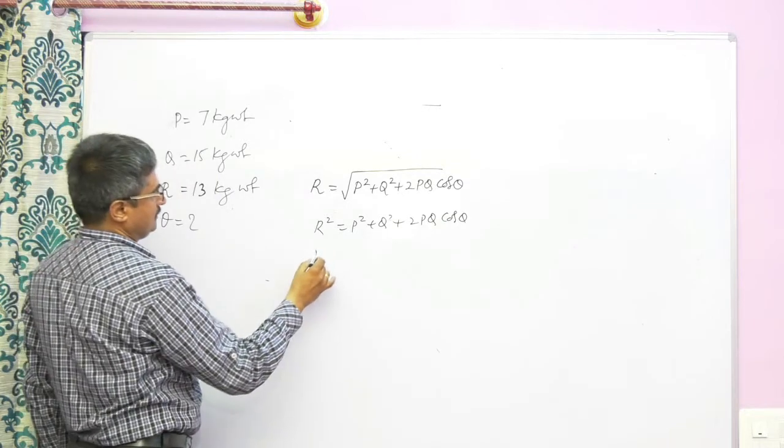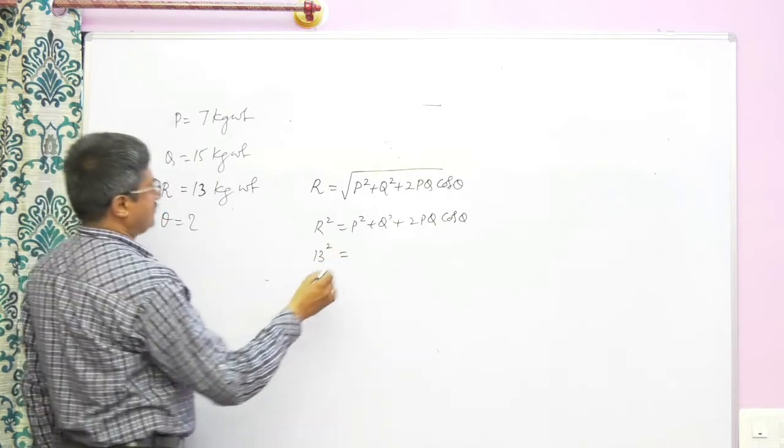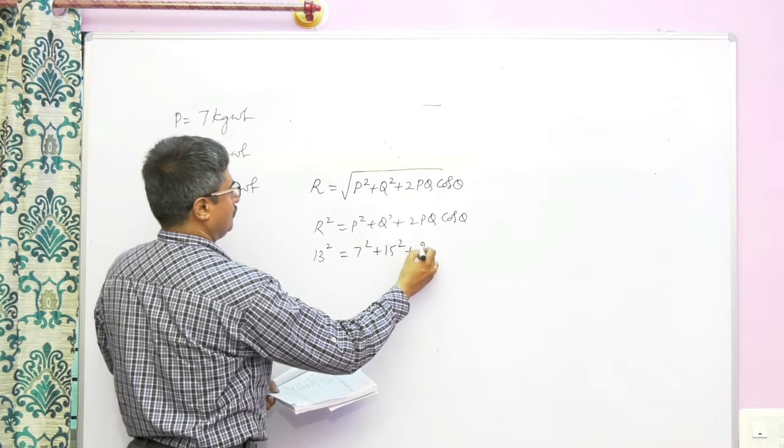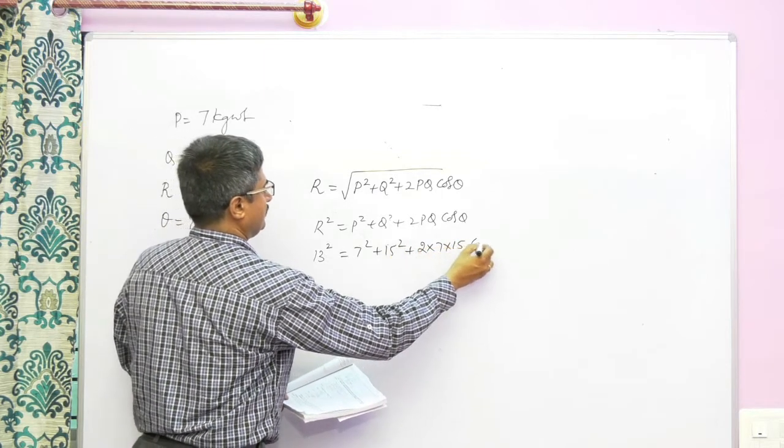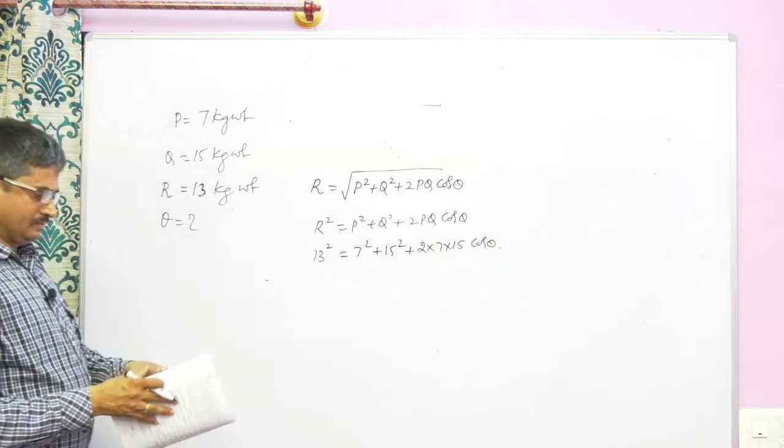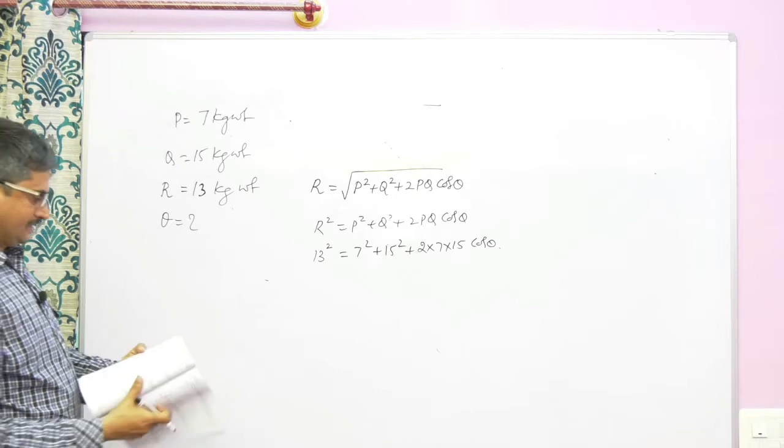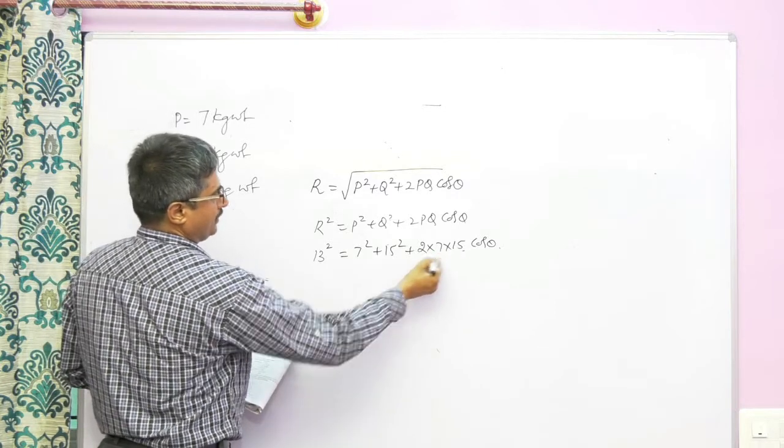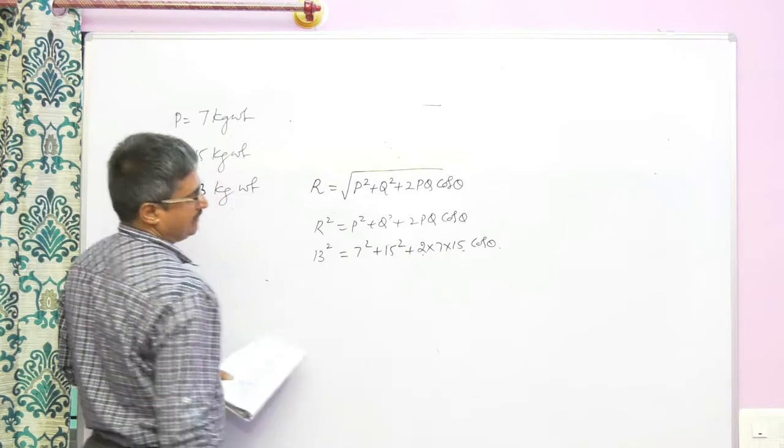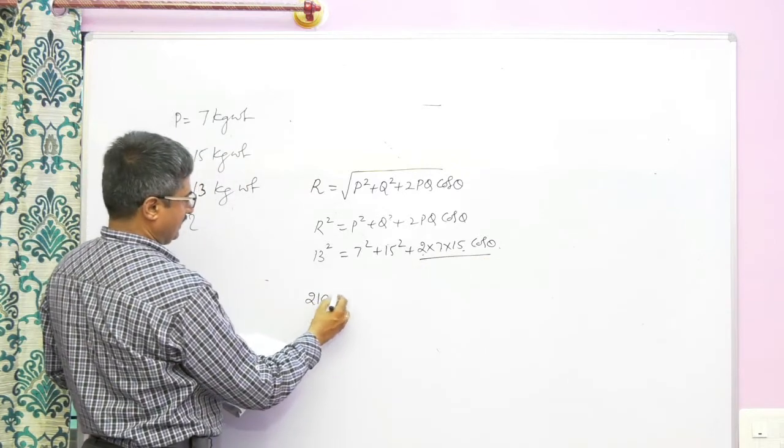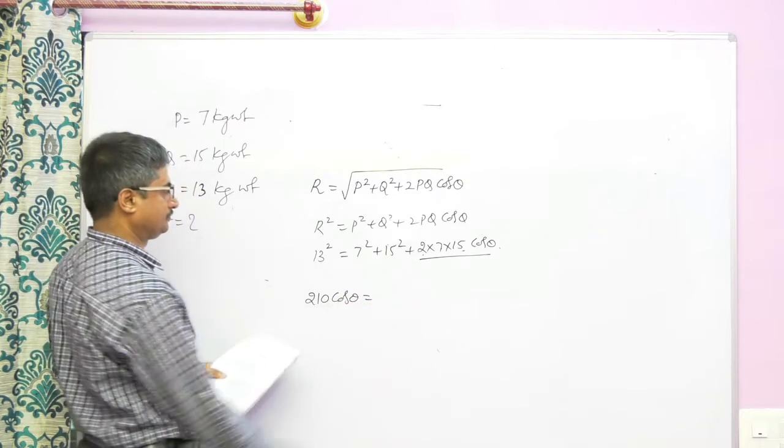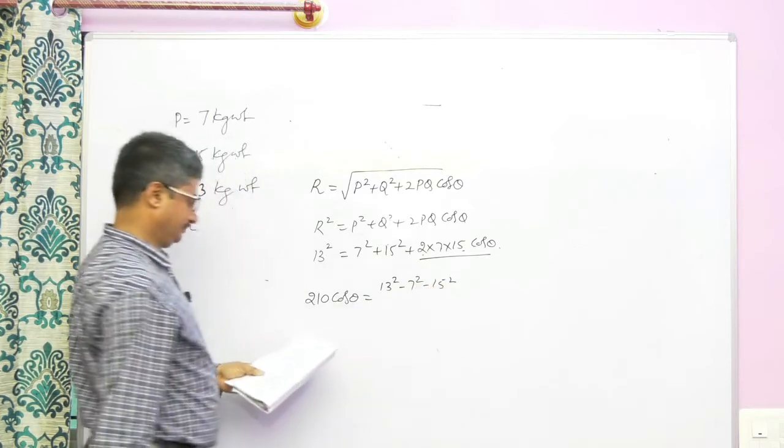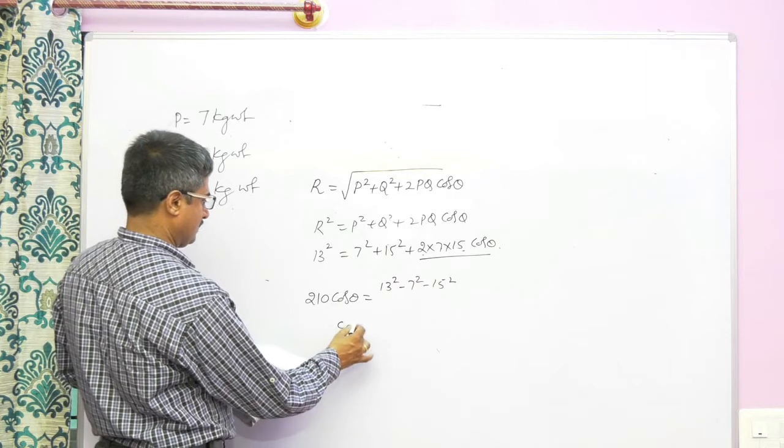R square 13 square, p square 7 square, q square 15 square, 2 into 7 into 15 into cos theta. Therefore, 210 cos theta is equal to 13 square minus 7 square minus 15 square. Therefore cos theta equals